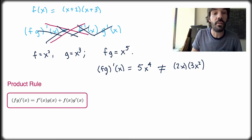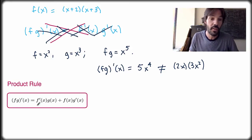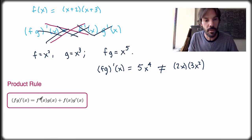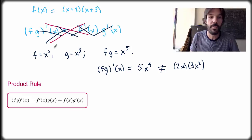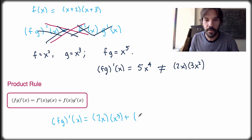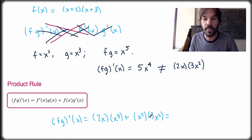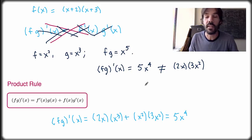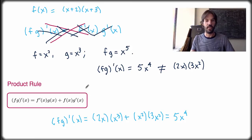The correct rule is the product rule: the derivative of f times g equals f' times g plus f times g'. In the example with f = x squared and g = x cubed, we get f'g + fg' = 2x · x³ + x² · 3x² = 2x⁴ + 3x⁴ = 5x to the fourth — which is indeed exactly the same result as before. So the product rule works, and this is the one you have to remember. We'll prove it in the next video, since it's a really important rule.